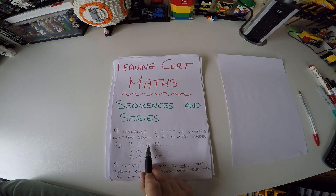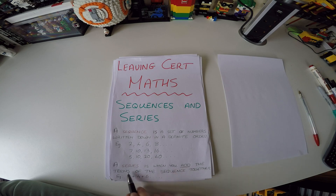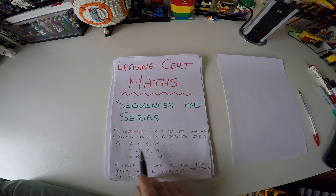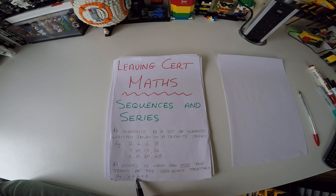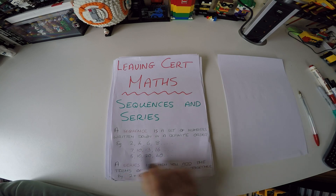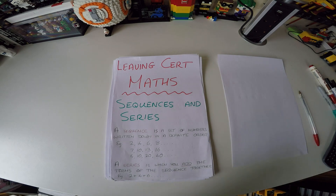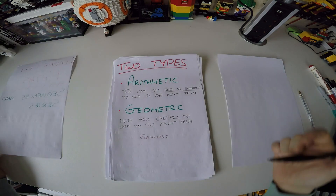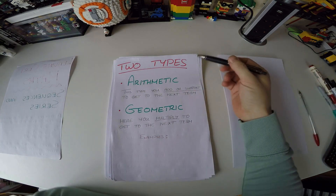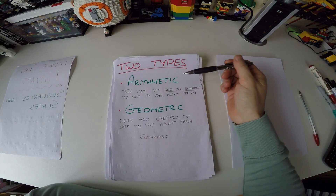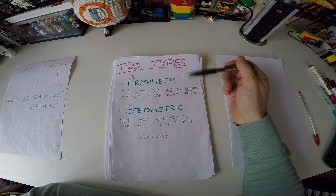That is a sequence, but a series is when you decide to add those terms of the sequence together. For example, with the first sequence, if we add 2 plus 4 plus 6 plus 8, that would be the series, because we're deciding to add the terms.